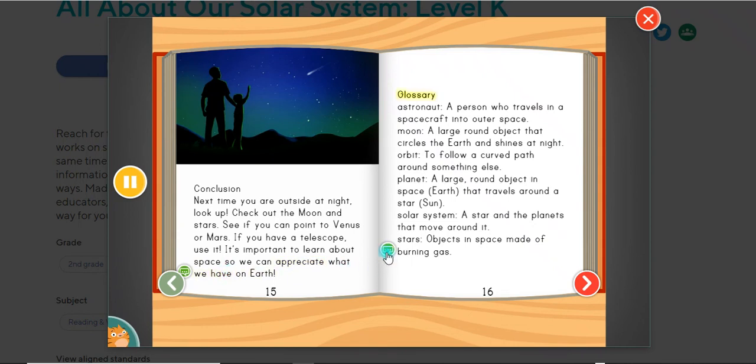Glossary. Astronaut: A person who travels in a spacecraft into outer space. Moon: A large, round object that circles the Earth and shines at night. Orbit: To follow a curved path around something else. Planet: A large, round object in space that travels around a star. Solar System: A star and the planets that move around it. Stars: Objects in space made of burning gas.